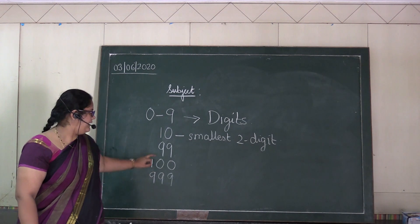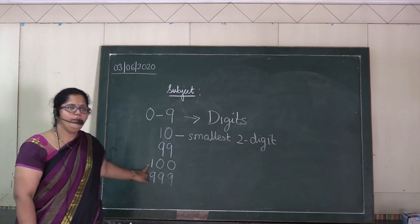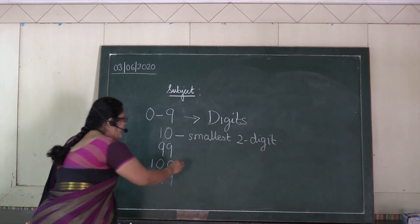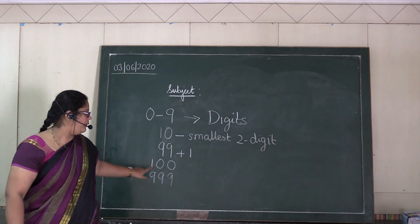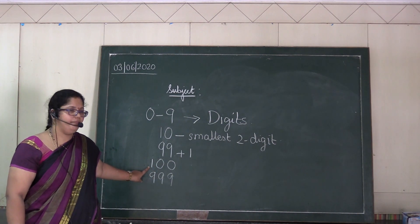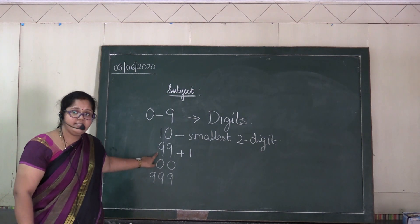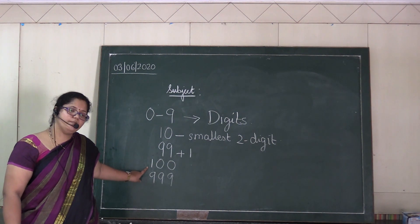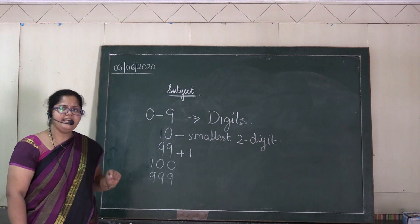If you see ninety-nine and hundred, how will you get hundred? If you add one to ninety-nine, you will get hundred — a three-digit number. So, when you add one to the largest two-digit number, you are getting the smallest three-digit number.